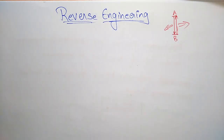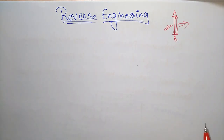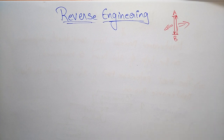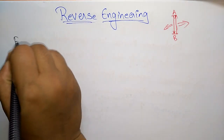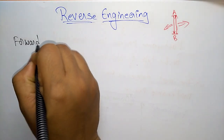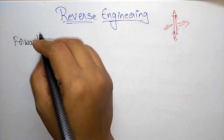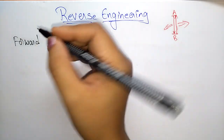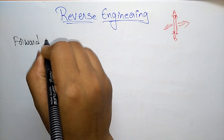By seeing the name itself you can understand: forward means going forward, following the forward steps. Reversing means coming back from the other side. Now let us see the definitions of forward engineering and reverse engineering, and after that I will explain the activities and concepts present in reverse engineering.